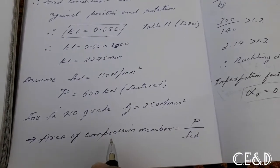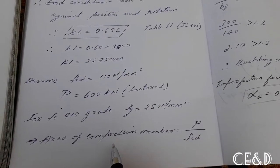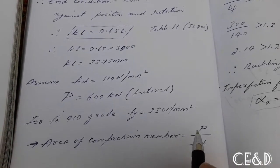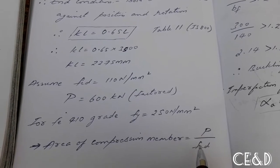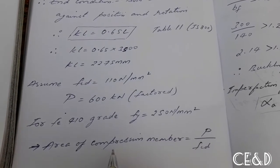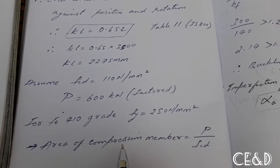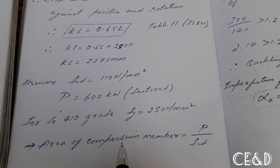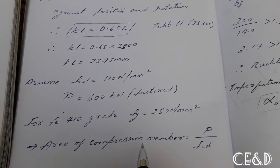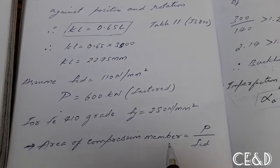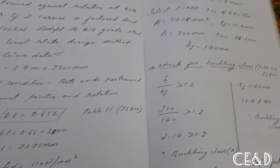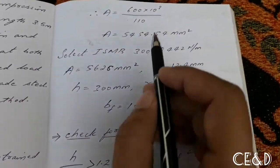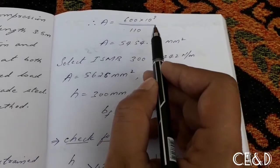To estimate the required area, use the stress formula: stress = load / area, which rearranges to area = load / stress. Assuming an approximate design compressive stress of 110 N/mm², and since the load is already factored in kN, multiply by 10³. So approximate required area = (600 × 10³) / 110 = 5454.54 mm².